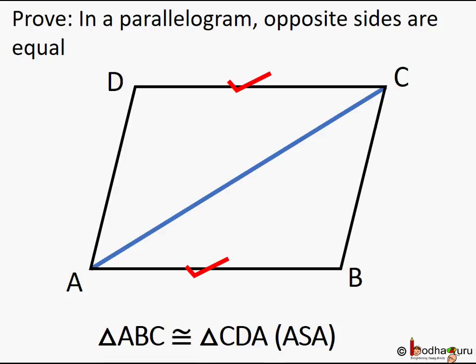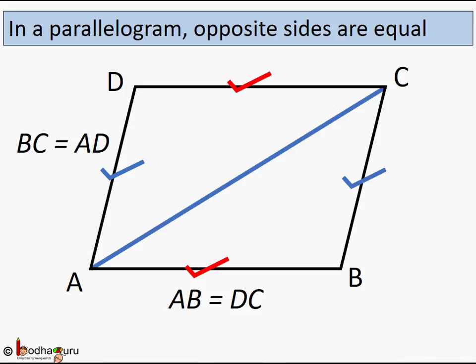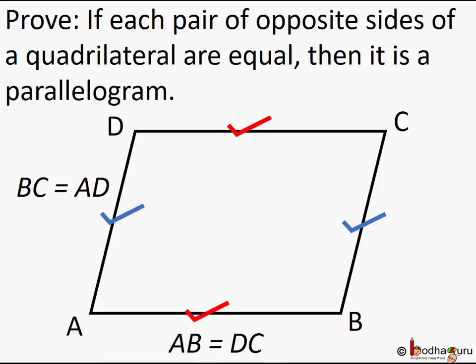So AB is equal to DC, and BC is equal to AD — these are corresponding sides of the two congruent triangles. We just got that opposite sides of parallelogram ABCD are equal. So in a parallelogram, opposite sides are equal. This is the most important property of a parallelogram.